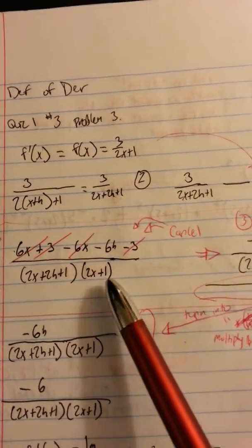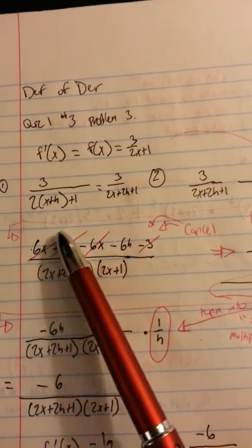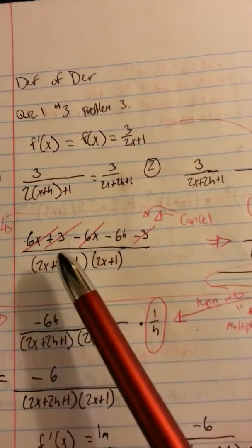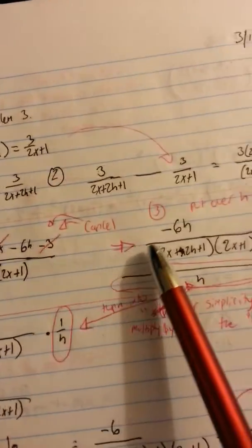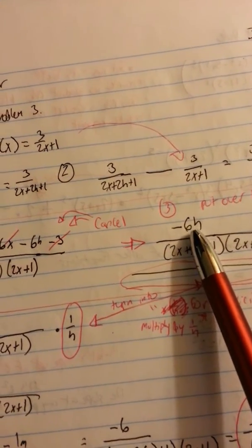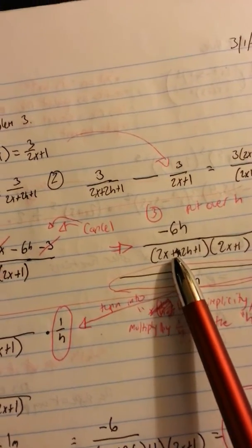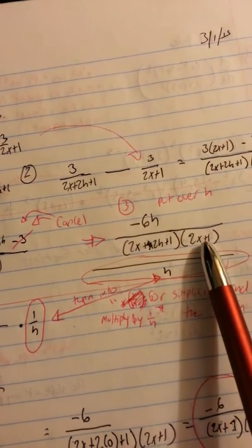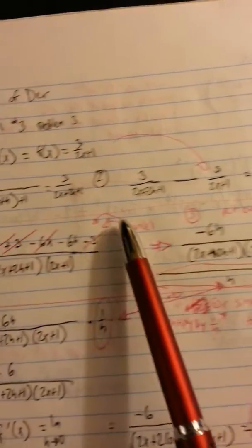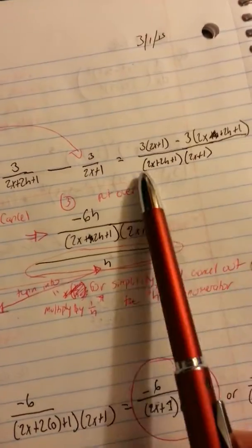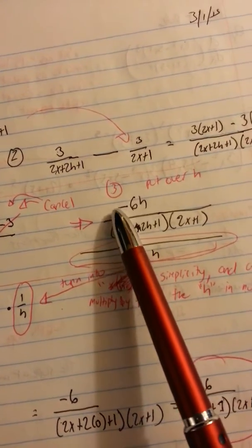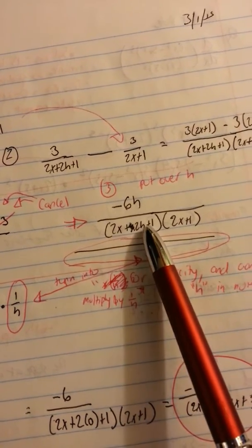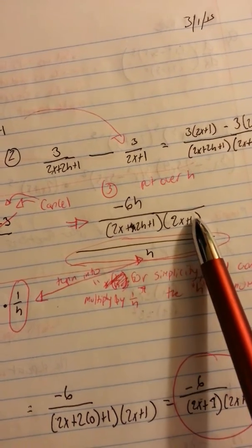You're going to cancel everything out. You're going to cancel as much as you can. You're going to cancel this 6x with this 6x, and you're going to cancel this 3 with this 3. So what you're left with is negative 6h over 2x plus 2h plus 1 times 2x plus 1. So the denominator is still the same as you got over here. That doesn't get touched at all.